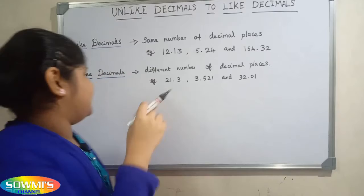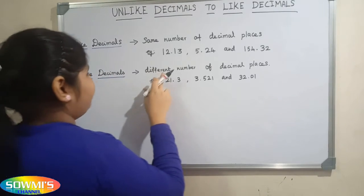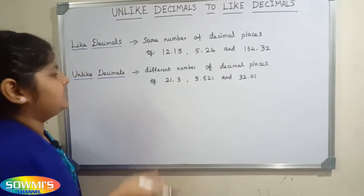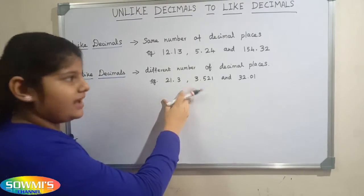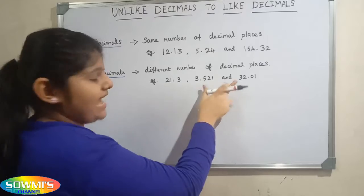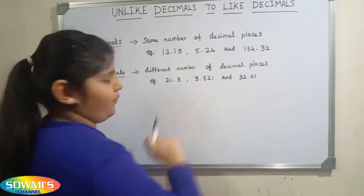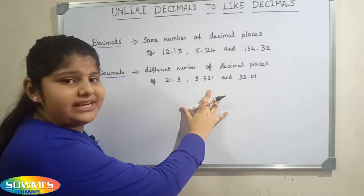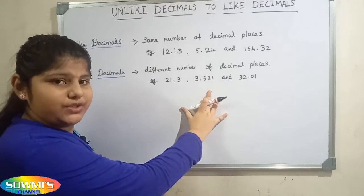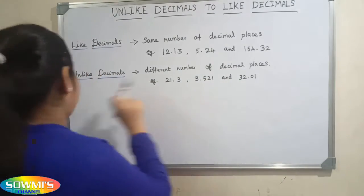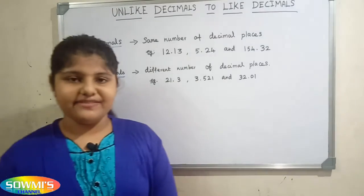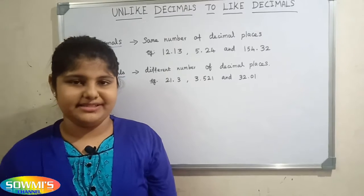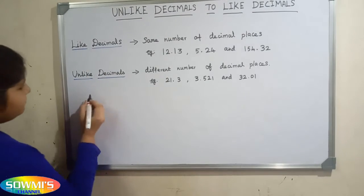Next we will see about unlike decimals. Unlike decimals have different number of decimal places. For example, 21.3, 3.521, and 32.01 — all these numbers have different number of decimal places, so they are called unlike decimals.